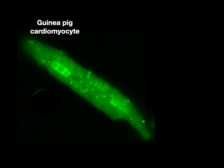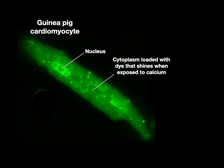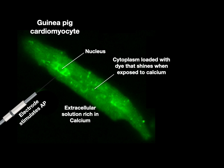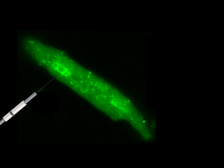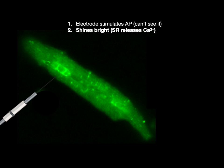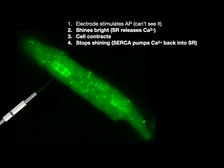Here's a guinea pig cardiomyocyte — there's the nucleus and the cytoplasm loaded with dye that shines when exposed to calcium. This cell is in an extracellular solution rich in calcium, and an electrode will stimulate an action potential. The electrode stimulates the action potential numerous times, and every time it does, the cell shines bright because the SR releases calcium and it's exposed to that dye. The cell contracts and then stops shining because SERCA pumps calcium back into the SR — watch how quickly this happens: 2, 3, 4.